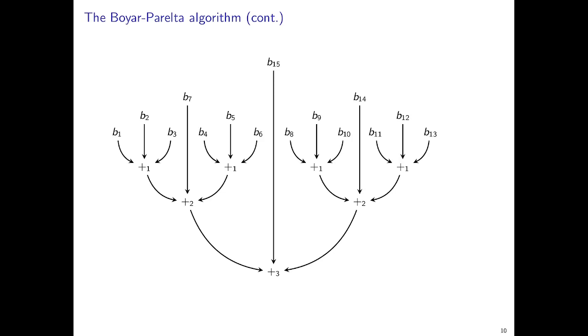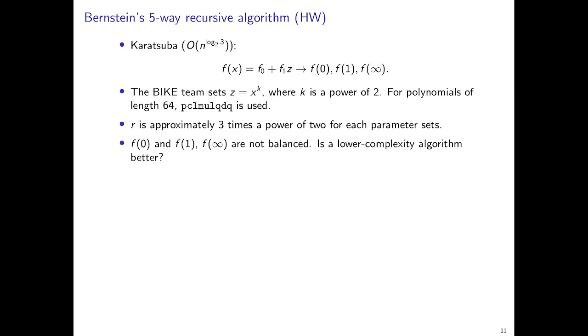Here is a picture that illustrates the algorithm. For example, if you want to add 15 bits, you want to compute the Hamming weight of this length 15 vector. Then what you would do is to add bits 1, 2, 3, 4, 5, 6, 8, 9, 10, 11, 12, 13 using full-adders. And then you add bits 1 to 7 using 2 full-adders. You add bits 8 to 14 using 2 full-adders. And then you add bits 1 to 15 using 3 full-adders.